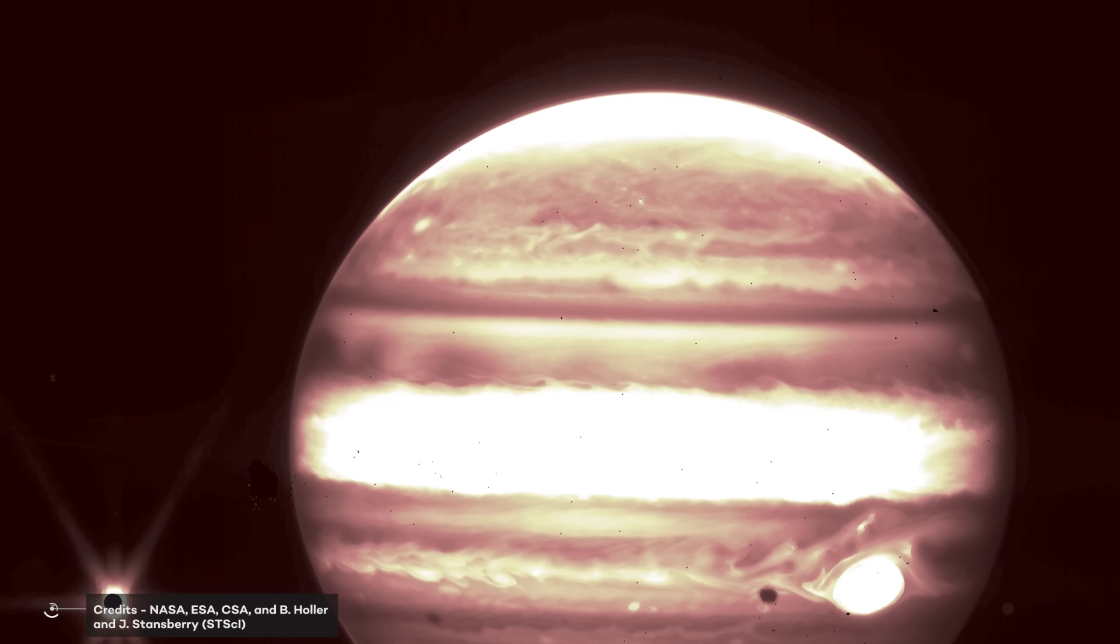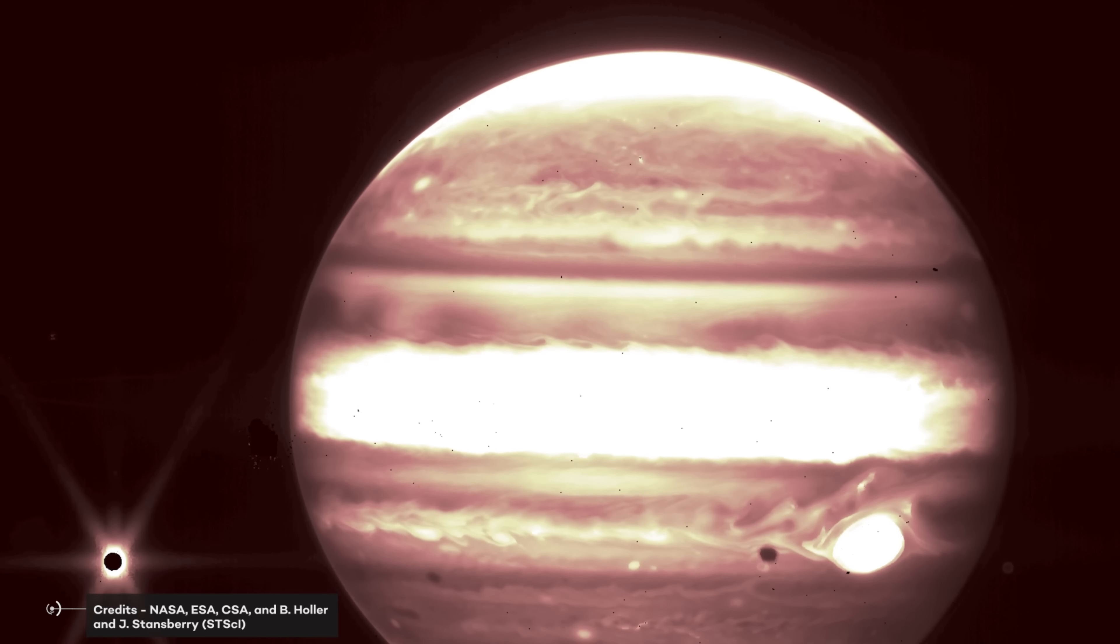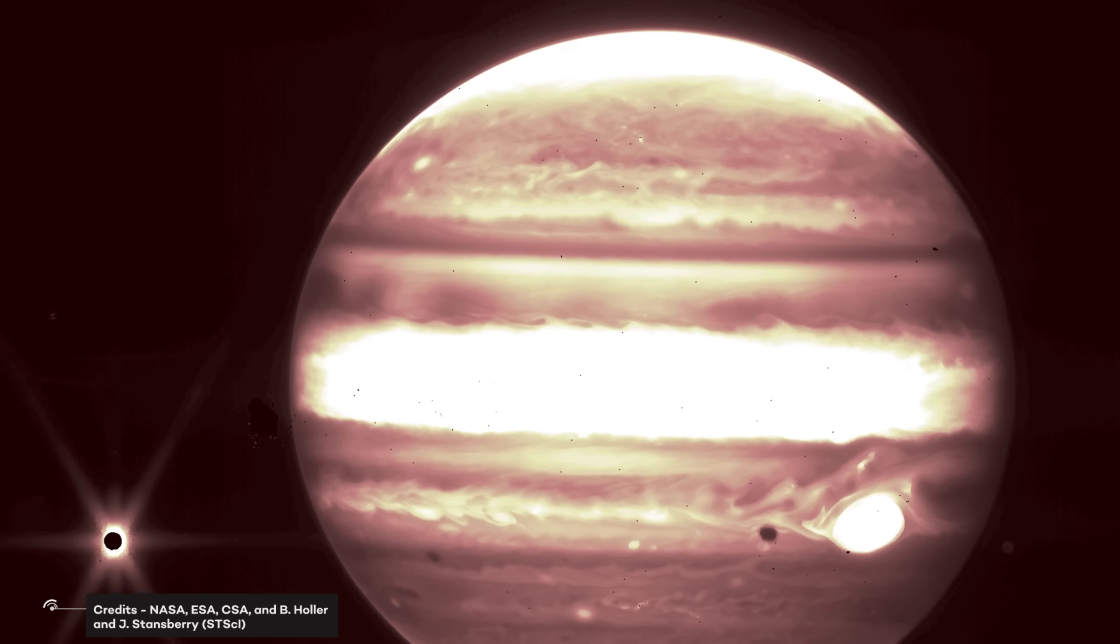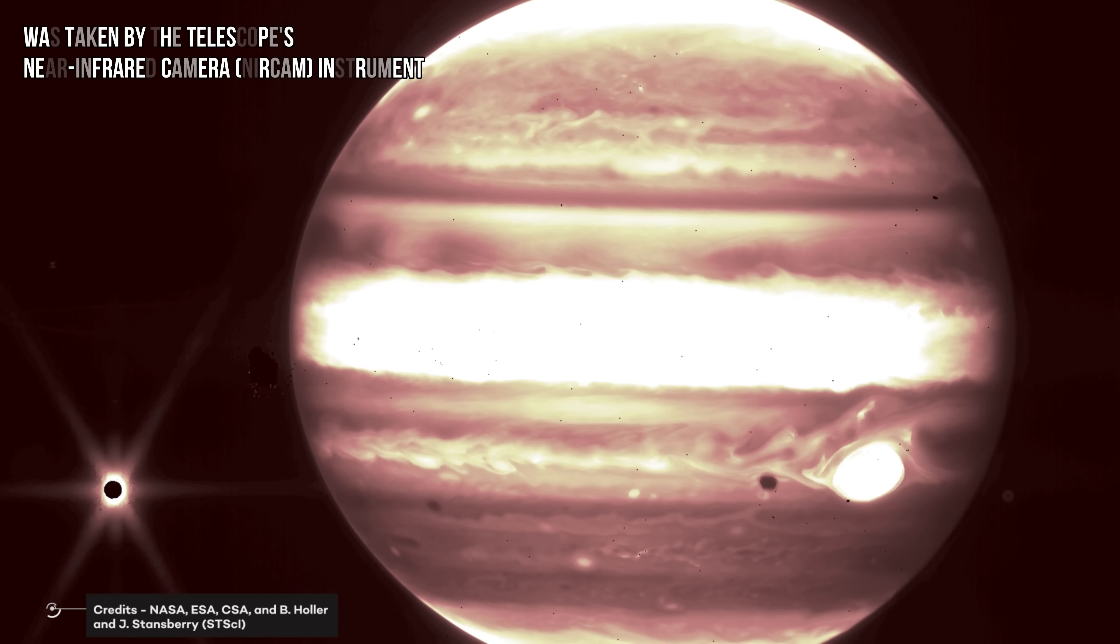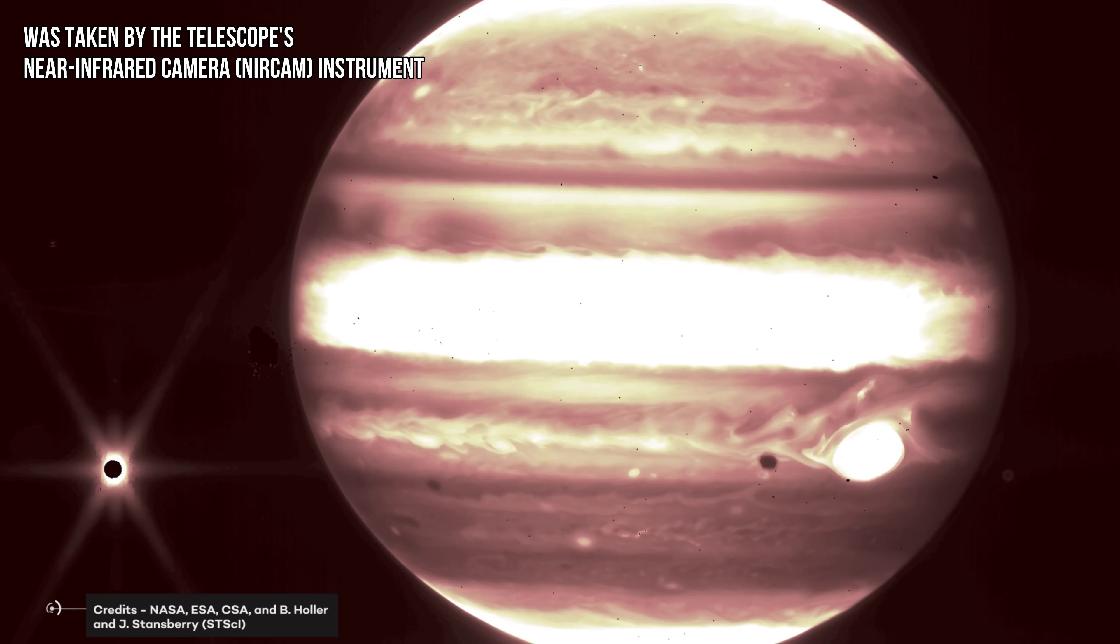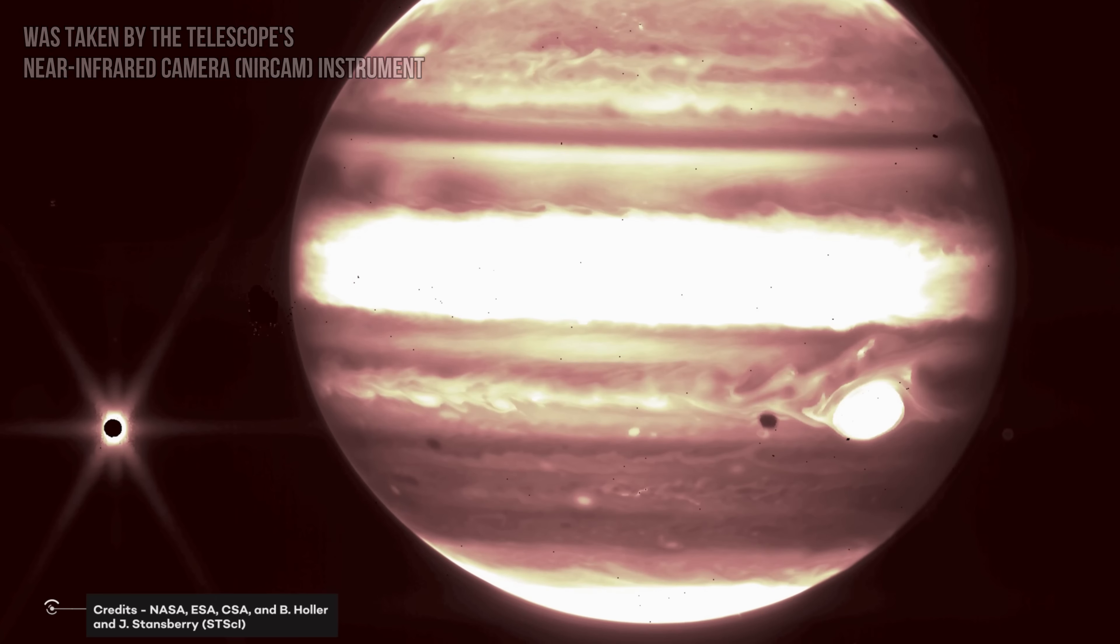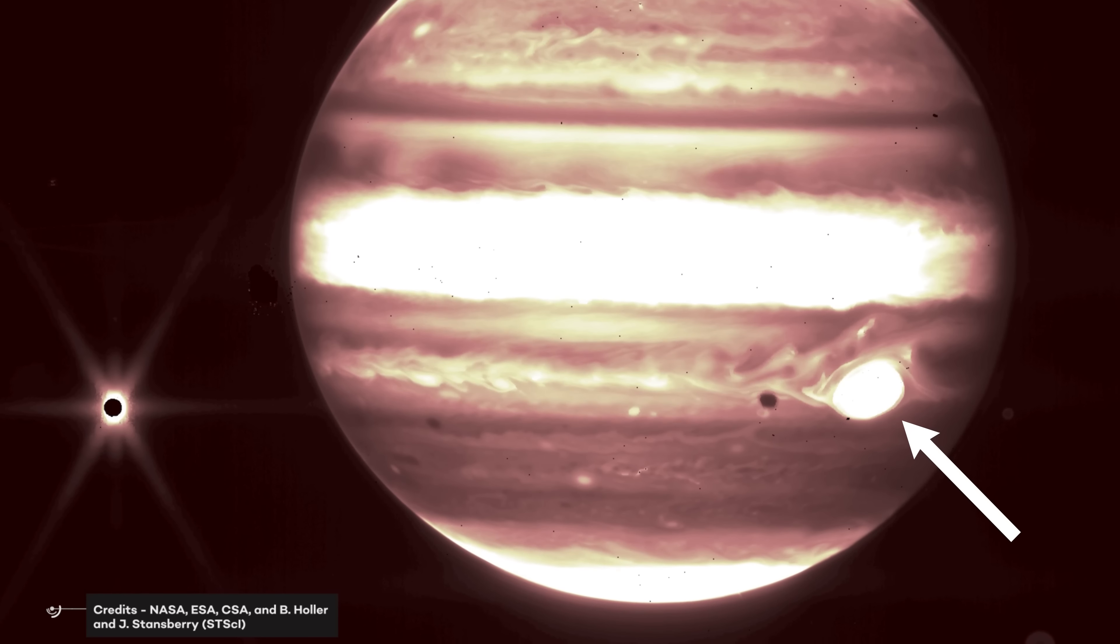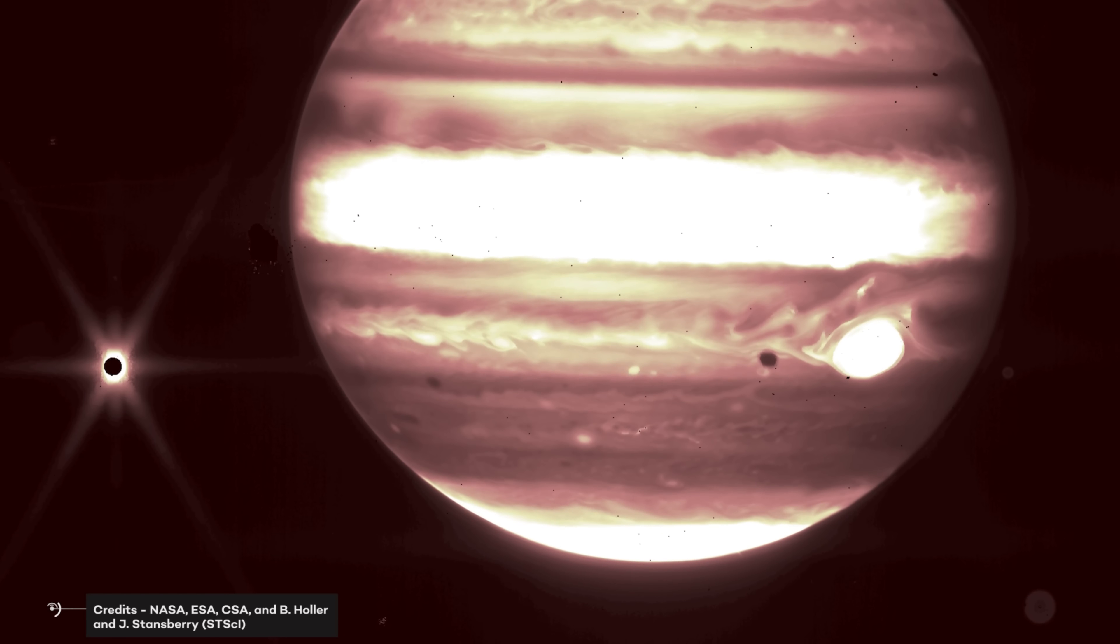The James Webb Space Telescope captured an incredible image of Jupiter and its moons, providing new insights into the gas giant's distinct bands and the Great Red Spot. The photo was taken by the telescope's Near Infrared Camera instrument using the short wavelength filter. The Great Red Spot is clearly visible in the image, even though it appears white due to the way the image was processed.